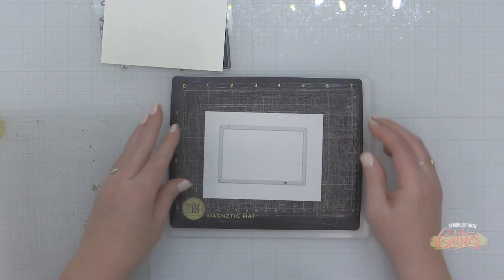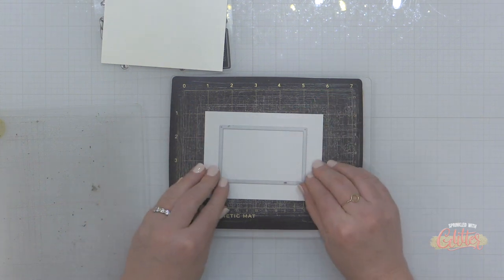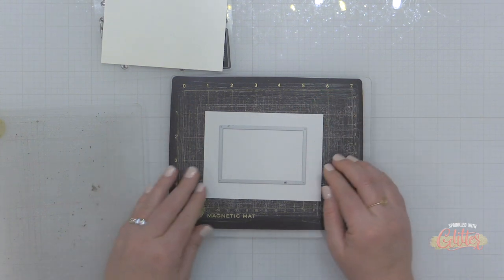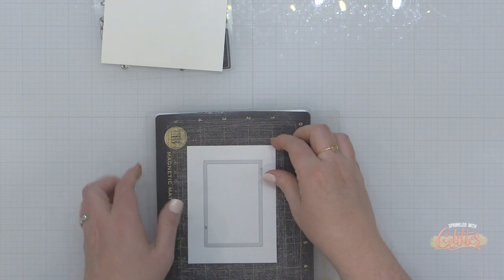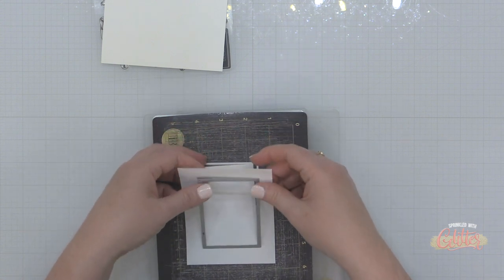Now for this card, I am using the Triple Step Posey Print Stamp Set and Coordinating Die Set from Concord and 9th. And I'm starting out with some Gina K Masking Magic. This is a masking paper.